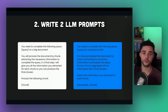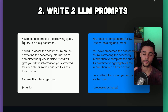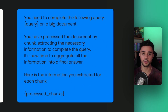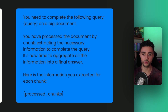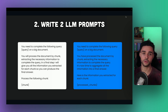Then we write two prompts. The first prompt is used to extract information from each chunk. The second prompt is used to aggregate the information we extracted from each chunk into a final answer. So in our case, the first prompt will extract a small summary of each individual chunk, and the second prompt will aggregate all those partial summaries into the final summary.